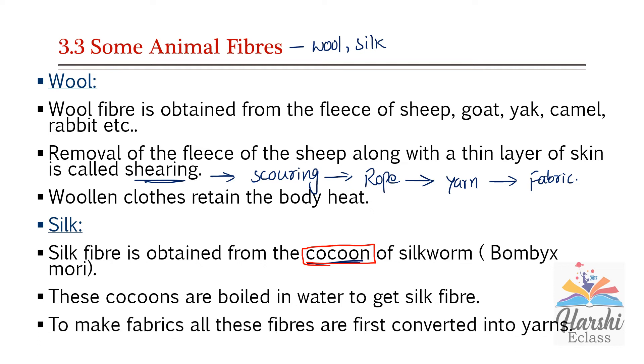For getting one kilogram of silk, around 6000 silkworms are killed. Silk is therefore a very costly fiber, and it is shiny.